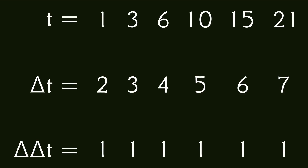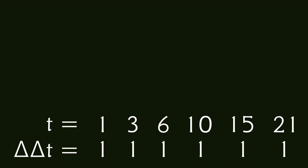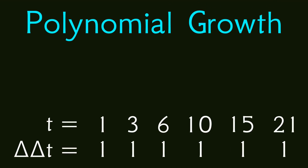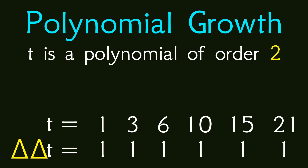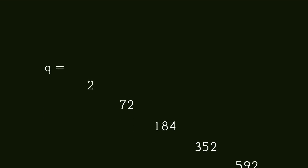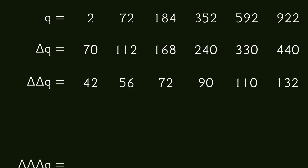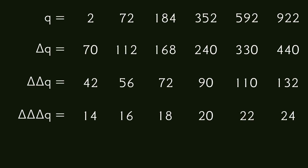We can make this more concrete by saying that the delta of delta t is a sequence where every element is one. Such a sequence where every element is the same is called a constant sequence. Looking back at the original sequence t, we see that applying delta to t two times results in a constant sequence. Any sequence that reaches a constant sequence after applying enough deltas is called a sequence of polynomial growth. t then is a polynomial of order two, where the order tells you how many deltas you need to take to get a constant sequence. So if a sequence is an order four polynomial, then the delta of the delta of the delta of the delta of that sequence is a constant sequence.